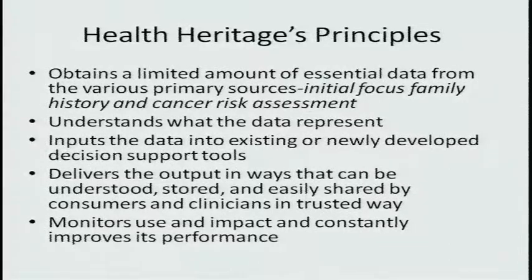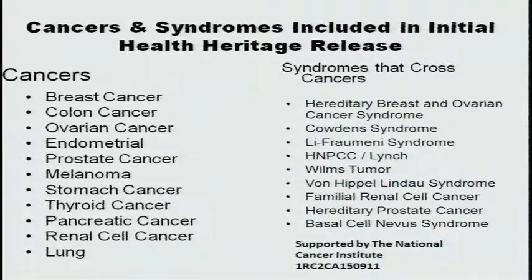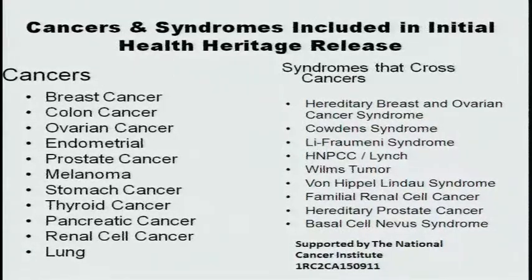What are the principles of this system? It attains a limited amount of essential data from the primary sources. We started with family history and cancer risk assessment because we were funded by the NCI, but we plan to go beyond that. We understand what the data represents, input it into new or existing support tools, deliver it in ways people can understand, and constantly monitor and improve it. Family history also serves as the foundation for genomic medicine beyond cancer and across all specialties.